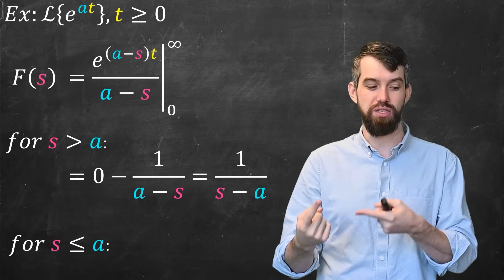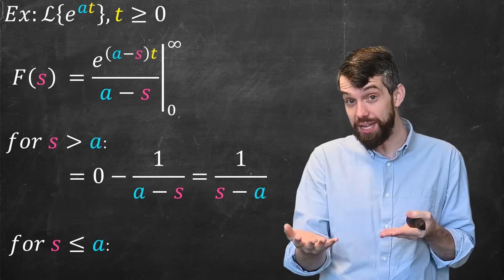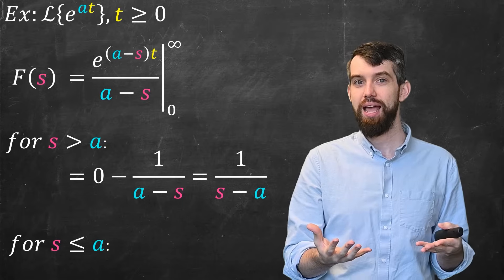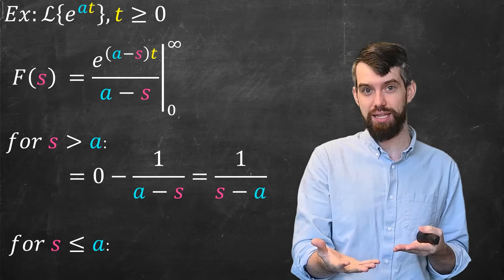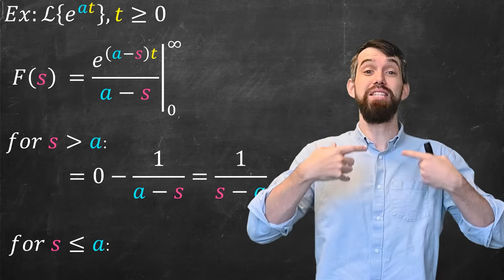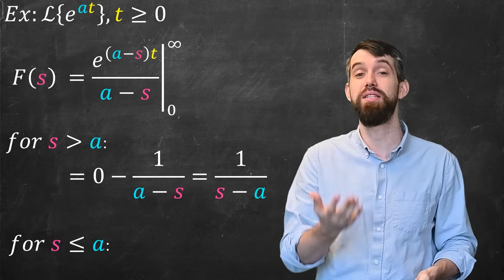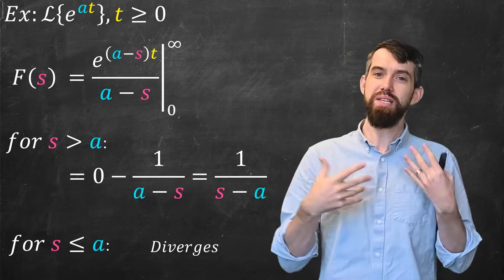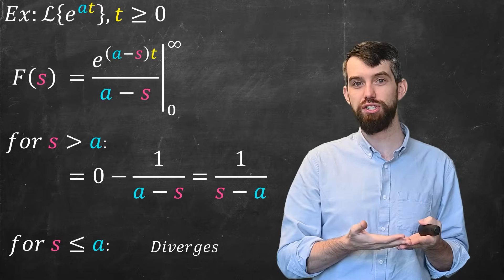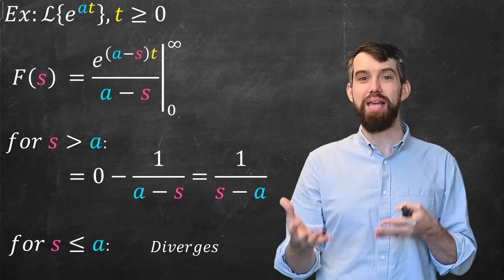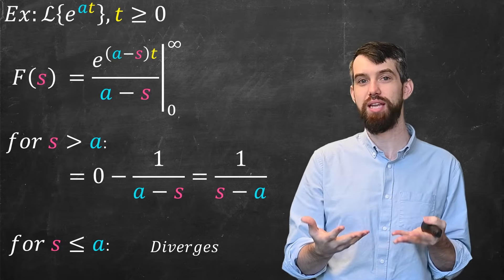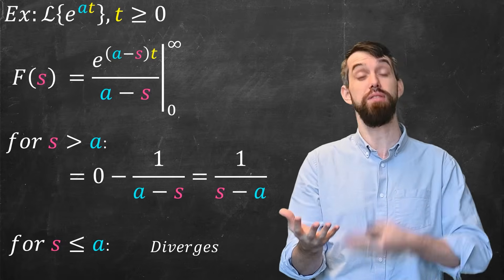In the other case, where s is less than or equal to a: if it's equal, then in the denominator you have a division by 0, so it diverges. And if s is strictly less than a, it's going to be an exponential that has a positive number times t going to infinity — likewise it's going to diverge. So in this example we've figured out how to compute the Laplace transform of this exponential function, and we've noted that the answer depends on the value of s relative to the constant a — sometimes you get divergence and sometimes convergence.